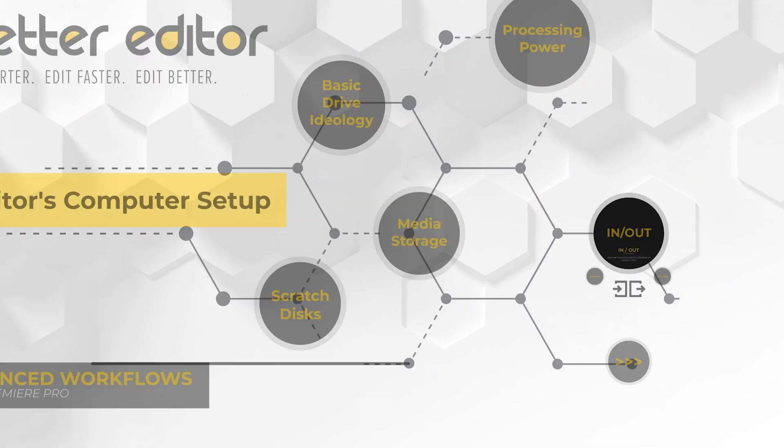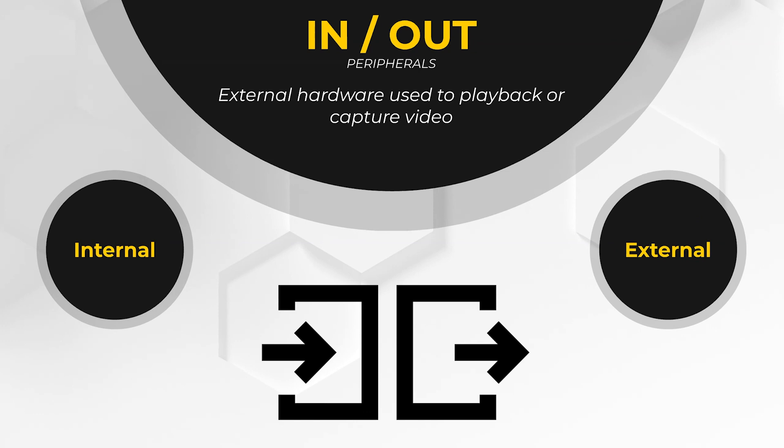Moving away from performance, we need to discuss how to get video in and out of your machine. Obviously you can export a video, but it's useful to be able to watch it on a large monitor or television while you're editing. If you're planning to do any professional color correcting, a reference monitor is a must and it has to be calibrated — but that's a whole other topic.